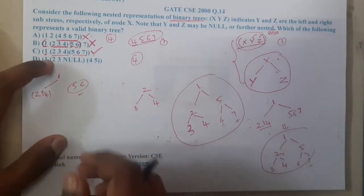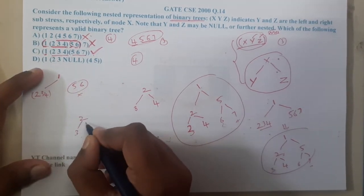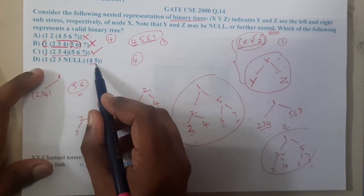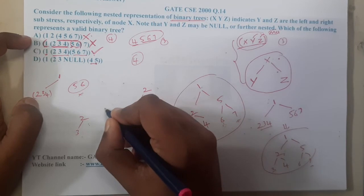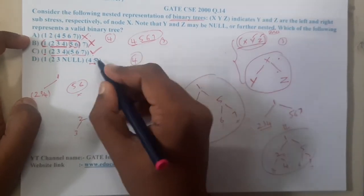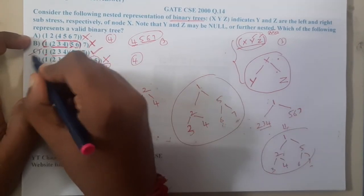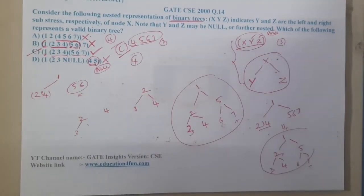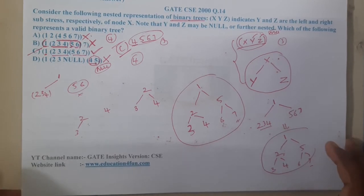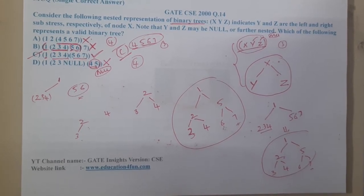Now option D: two, three, and null — null means no child there, which is fine. But then four and five are given, and it is unclear whether five is a left or right child of four — a null should have been specified there, but it is missing. So option D is also wrong. Hence the answer is C. There are various methods to solve a problem; use the approach which is easiest for you.